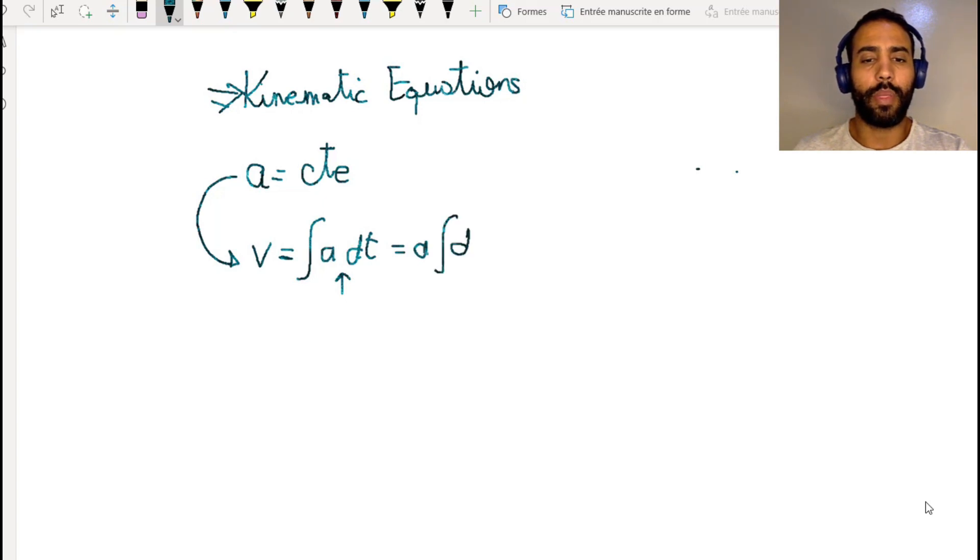We end up with something like at, but you need to add a constant. This is the integration constant, which is equal to the initial velocity v_i.